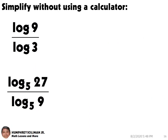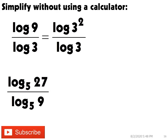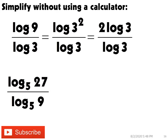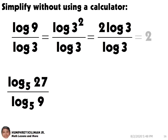Now, simplify the following without using a calculator. Log 9 over log 3. This is equal to log 3 squared over log 3. Then, we can put the exponent in front of log 3, and then cancel out the log 3 in the numerator and the denominator. So this is equal to 2.